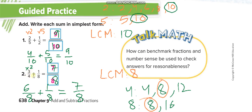For 3/4 plus 1/8: the LCM of 4 and 8 is 8. The second fraction 1/8 already has denominator 8. For 3/4, we multiply by 2 since 4 times 2 is 8, giving 6/8. So 6/8 plus 1/8 equals 7/8.